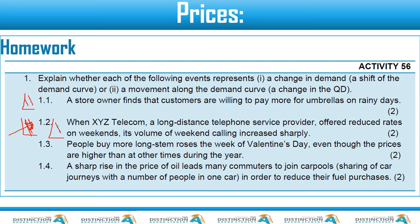The next one: people buy more long-stem roses on the weekend of Valentine's Day, even though prices are actually higher, which sounds contradictory to the law. So this is just like number one — it will be a shift of the demand curve. The next one: a sharp rise in the price of oil. Whenever we talk about price as the reason, that is going to cause a movement along the demand curve. If it's something other than price, it will be a shift of the demand curve. Please take note — the oil example will be a movement along the demand curve.